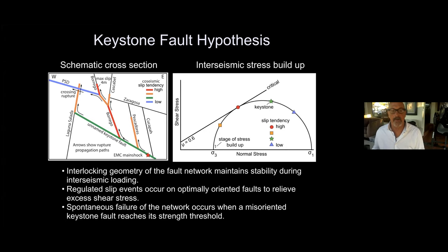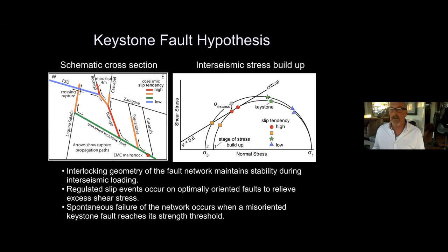This schematic cross-section shows the cross-cutting relationships of the fault network, with arrows indicating the paths the rupture took after starting on the moderately dipping normal fault. Notice the interlocking geometry whereby optimally oriented faults are pinned against misoriented faults. The first stage of interseismic stress buildup occurs decades, centuries, and possibly millennia before the main event. It starts when the most optimally oriented fault reaches criticality and begins to slip. However, we hypothesize that it cannot produce a large earthquake because it is pinned against a misoriented fault that is well below critical. Regional stress continues to build, and the optimally oriented fault bleeds off excess shear stress in micro-slip events and creep.